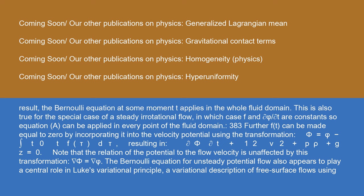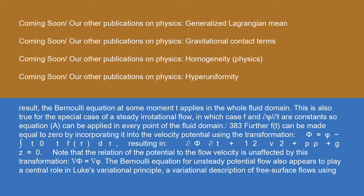f(t) can be made equal to zero by incorporating it into the velocity potential using the transformation: φ' = φ - ∫[t₀ to t] f(τ) dτ, resulting in ∂φ'/∂t + ½v² + p/ρ + gz = 0. Note that the relation of the potential to the flow velocity is unaffected by this transformation: ∇φ' = ∇φ. The Bernoulli equation for unsteady potential flow also appears to play a central role in Luke's variational principle, a variational description of free surface flows using Lagrangian mechanics.